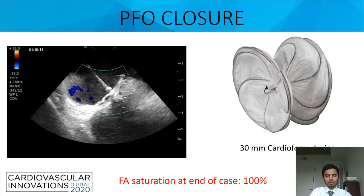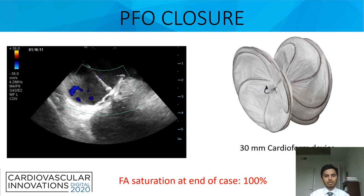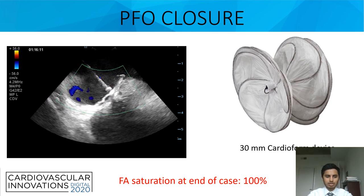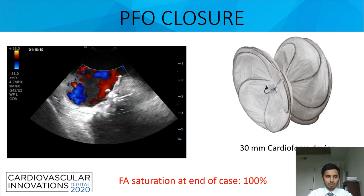Given that her hypoxemia was thought to be largely secondary to the right-to-left shunt, the decision was made to close the PFO. The PFO was closed using a 30-millimeter Cardioform device under intracardiac echo guidance. Her femoral artery saturation at the end of the case was 100%, increased from 91% prior to the PFO closure. The device placement is noted here.